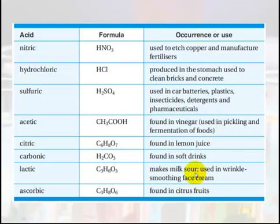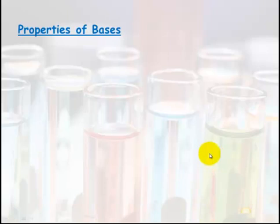Some other ones: lactic acid in milk, lactic acid is also produced in your muscles, ascorbic acid is vitamin C, carbonic acid is found in your soft drinks, and citric acid is found in lemon juice.